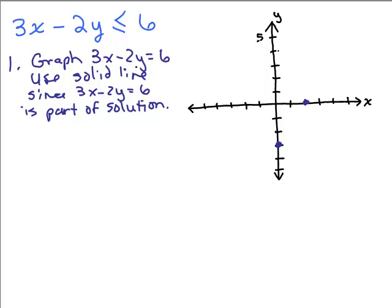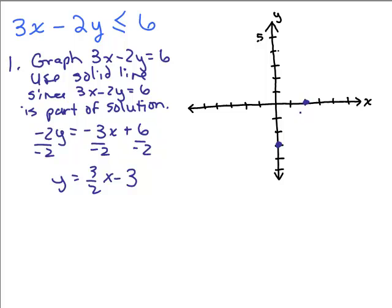But you can use any method you want. You can solve for y and put it in slope intercept form. If you did put this in slope intercept form, I'm just going to remind you how to do that quickly. Negative 2y is equal to negative 3x plus 6 and divide by negative 2. You would have y equals 3 halves x minus 3 and notice this tells you the y intercept is negative 3 and the slope is 3 halves. I go over 2 and up 3.